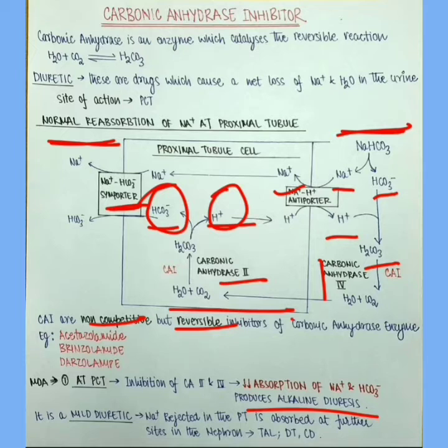It is also important to note that carbonic anhydrase inhibitors are mild diuretic because sodium that is rejected in the PCT is absorbed at further sodium absorbing sites in the nephron like thick ascending limb of loop of Henle, the distal tubule and collecting ducts.